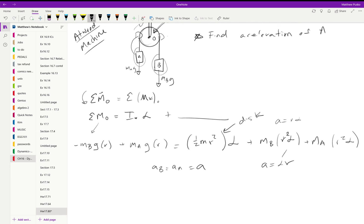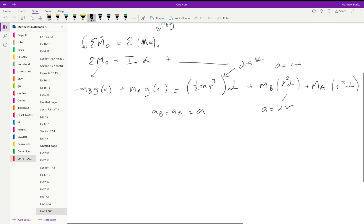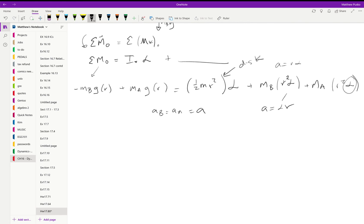I can solve this equation for alpha. I get alpha is equal to g times the difference in the masses. I'll use big M for the mass of the disk or the pulley disk.